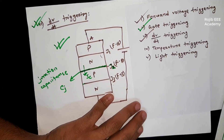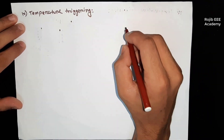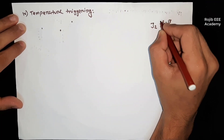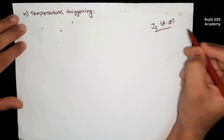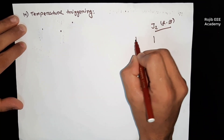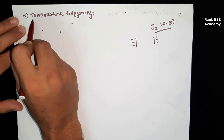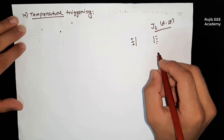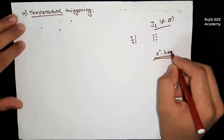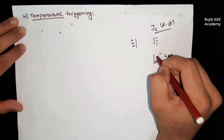The temperature turn-on method is very simple. The junction J2 is in reverse biased state — that means the anode is at positive and cathode is at negative, so junction J2 remains reverse biased. When reverse biased, the depletion layer is formed, and positive charge and negative charge are stored on each side.